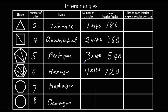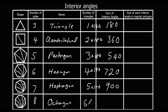So you can probably spot the pattern going on here. Counting carefully: one, two, three, four, five — five triangles for the heptagon. And this should give me six — one, two, three, four, five, six triangles for the octagon. So five times 180 is 900. And six times 180 would be 1080.